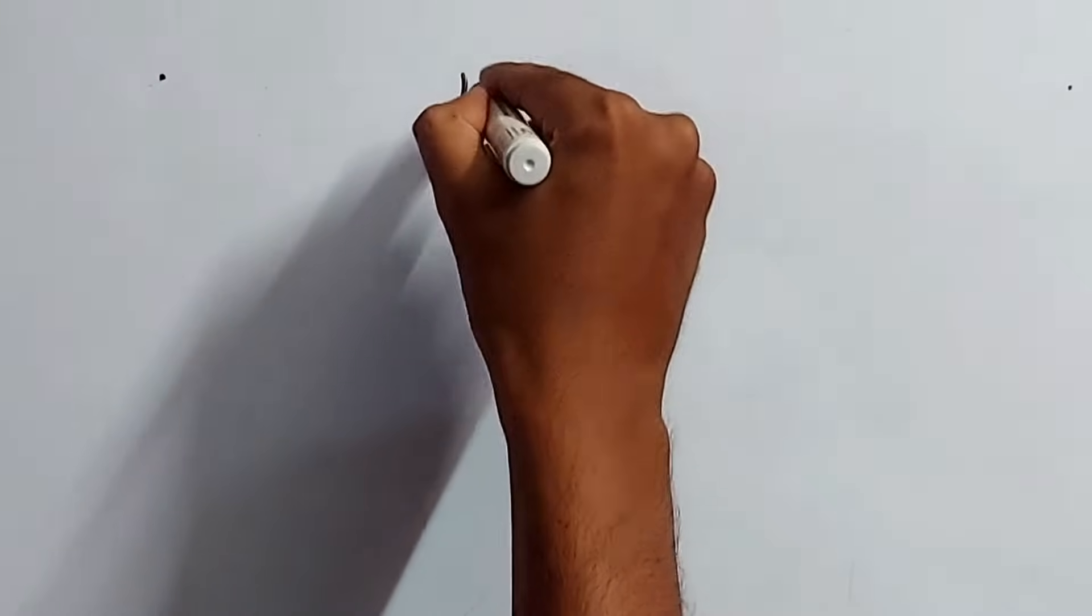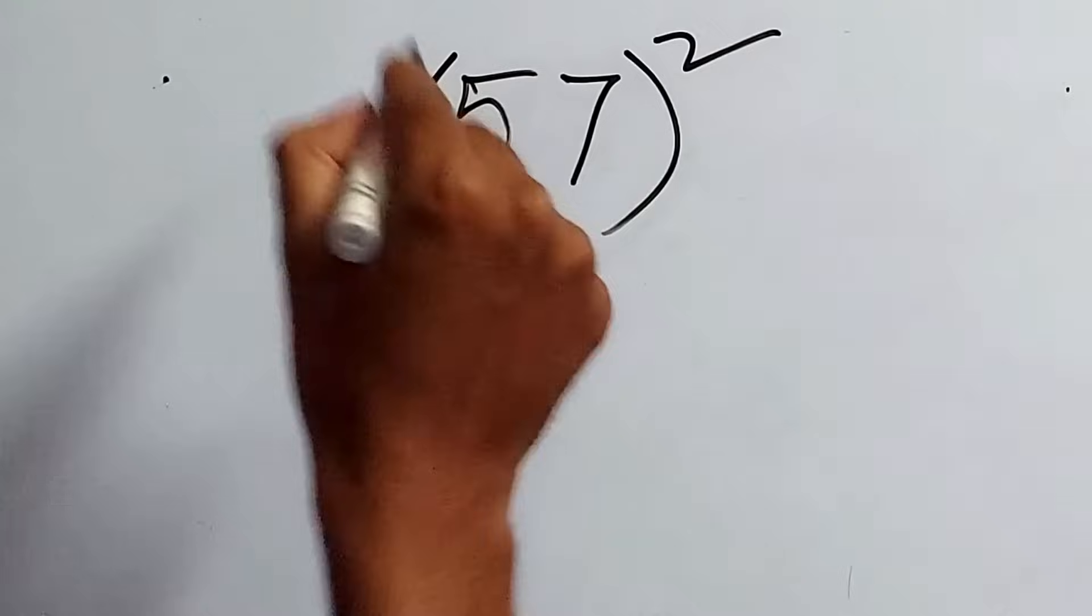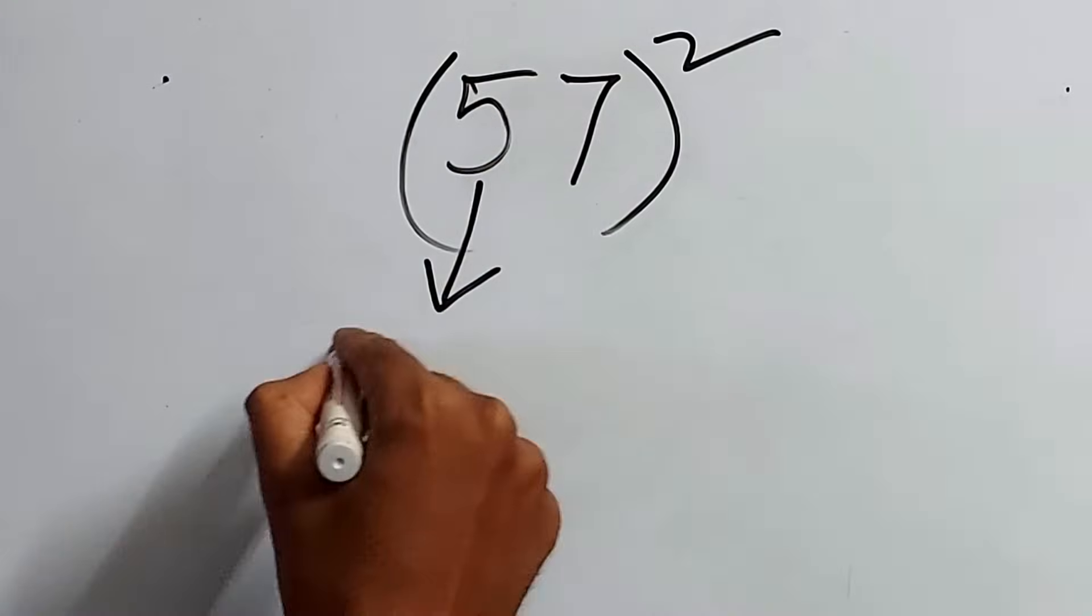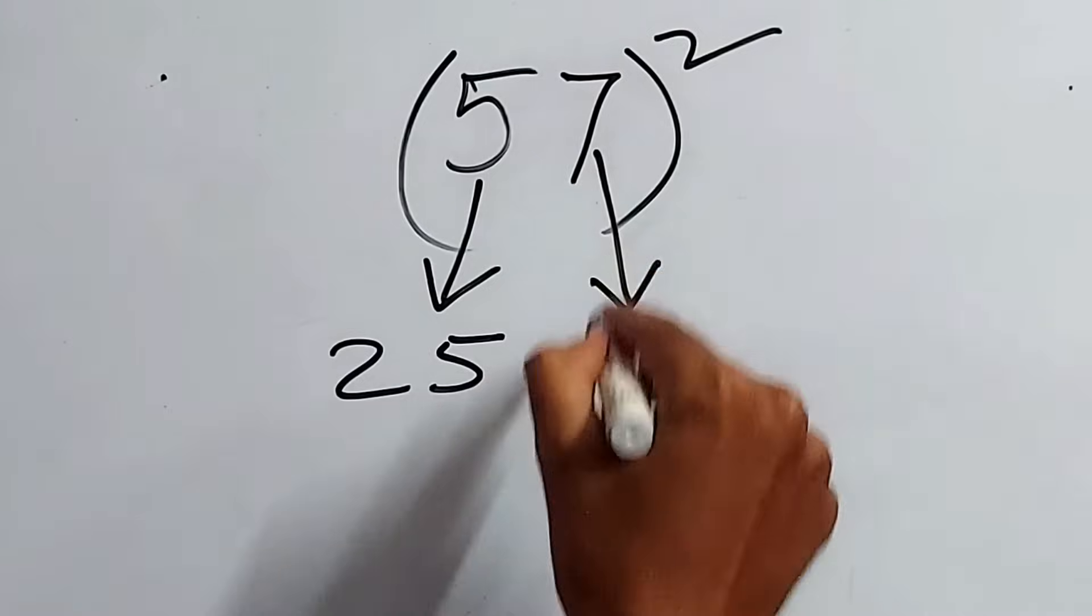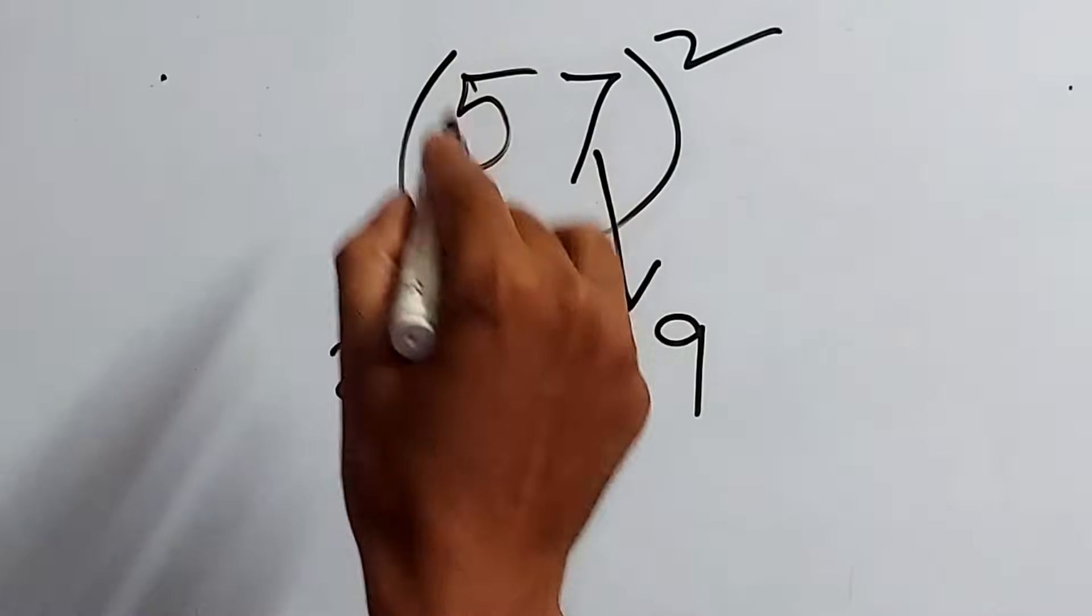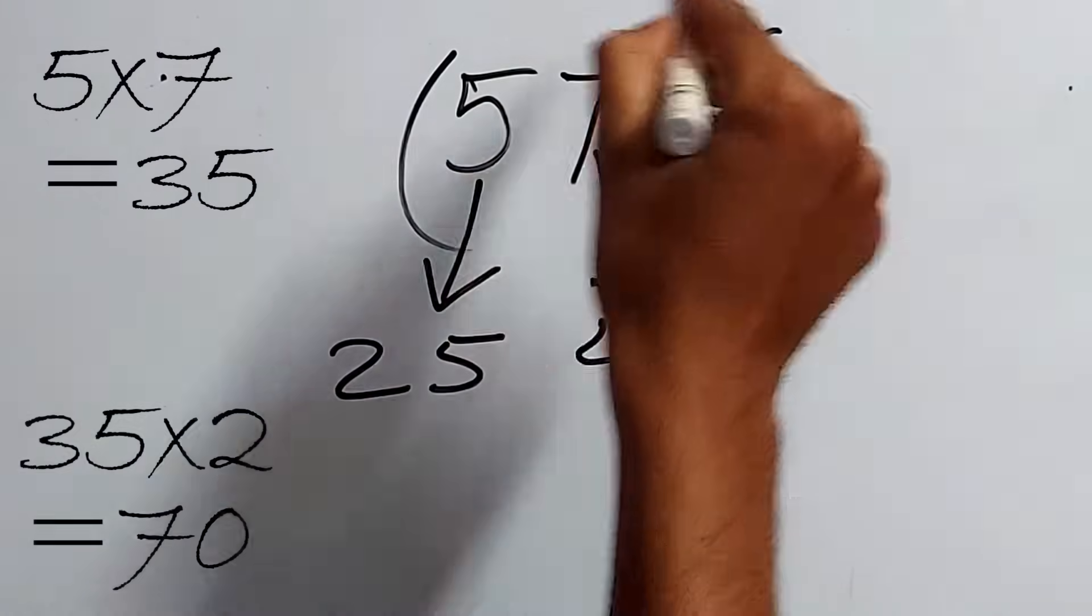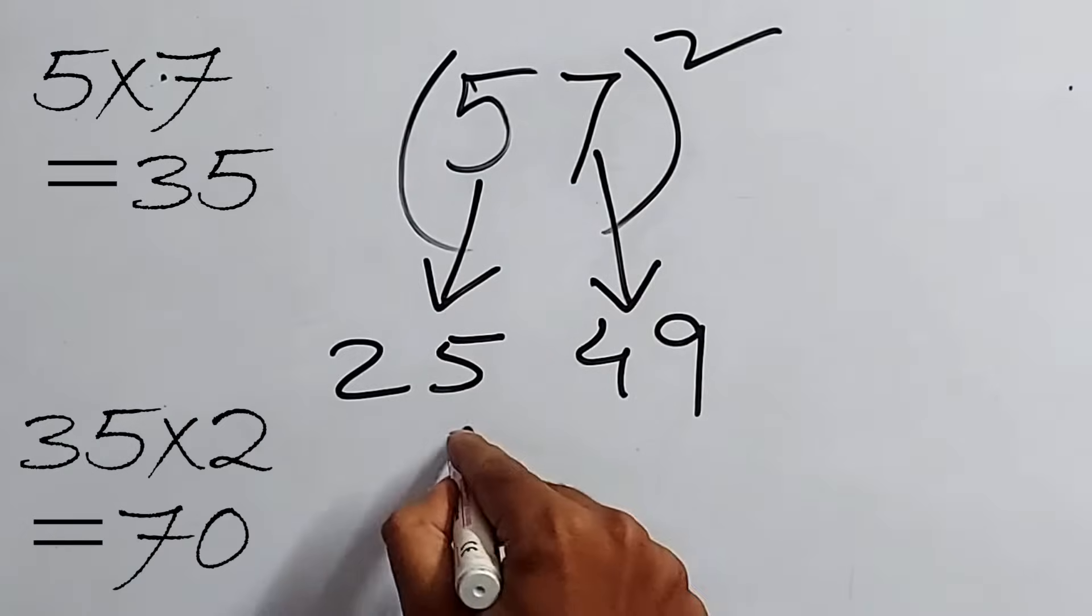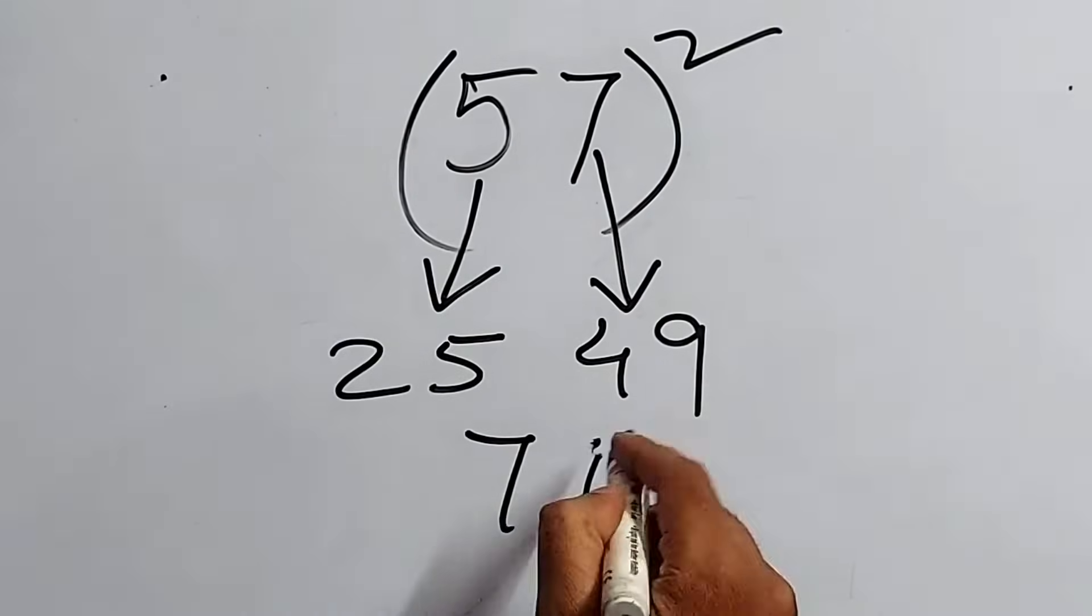There is 57 whole square. I just have the square of this 5, that is 25, and square of this 7, that is 49. And now, again, the same way. Just multiply this 2, that is 5 into 7, that is 35. 35 into 2, that is 70. So write 70 right here, leaving one place, as we said earlier.